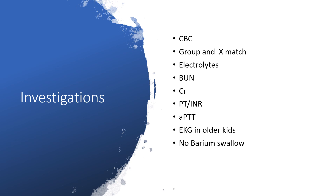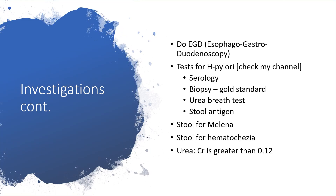And electrolytes, blood urea nitrogen, creatinine should be assessed. PT or INR and APTT to know what is happening to the coagulation pathway, particularly the liver. And EGD in other cases — no barium swallow. We can do esophagogastroduodenoscopy and test for H. pylori. You can check my channel for H. pylori testing — that was published recently.